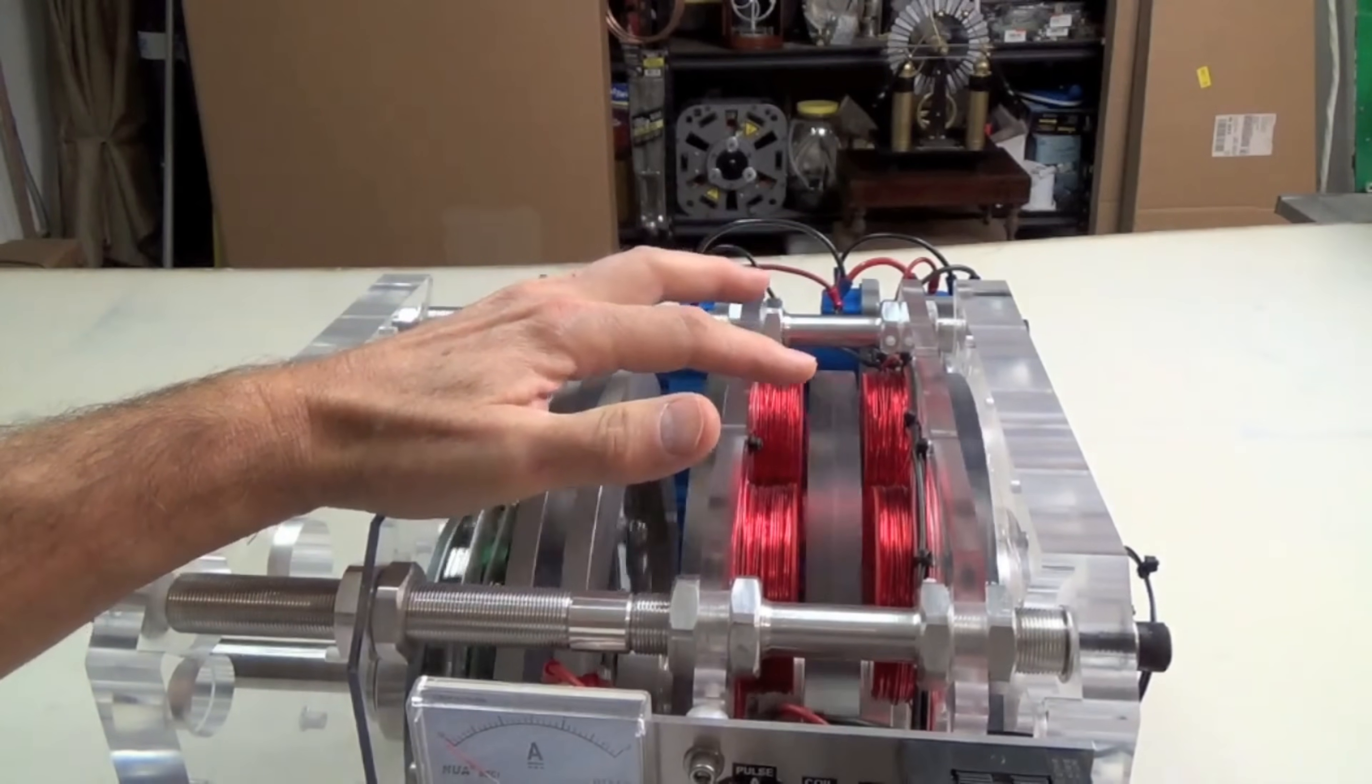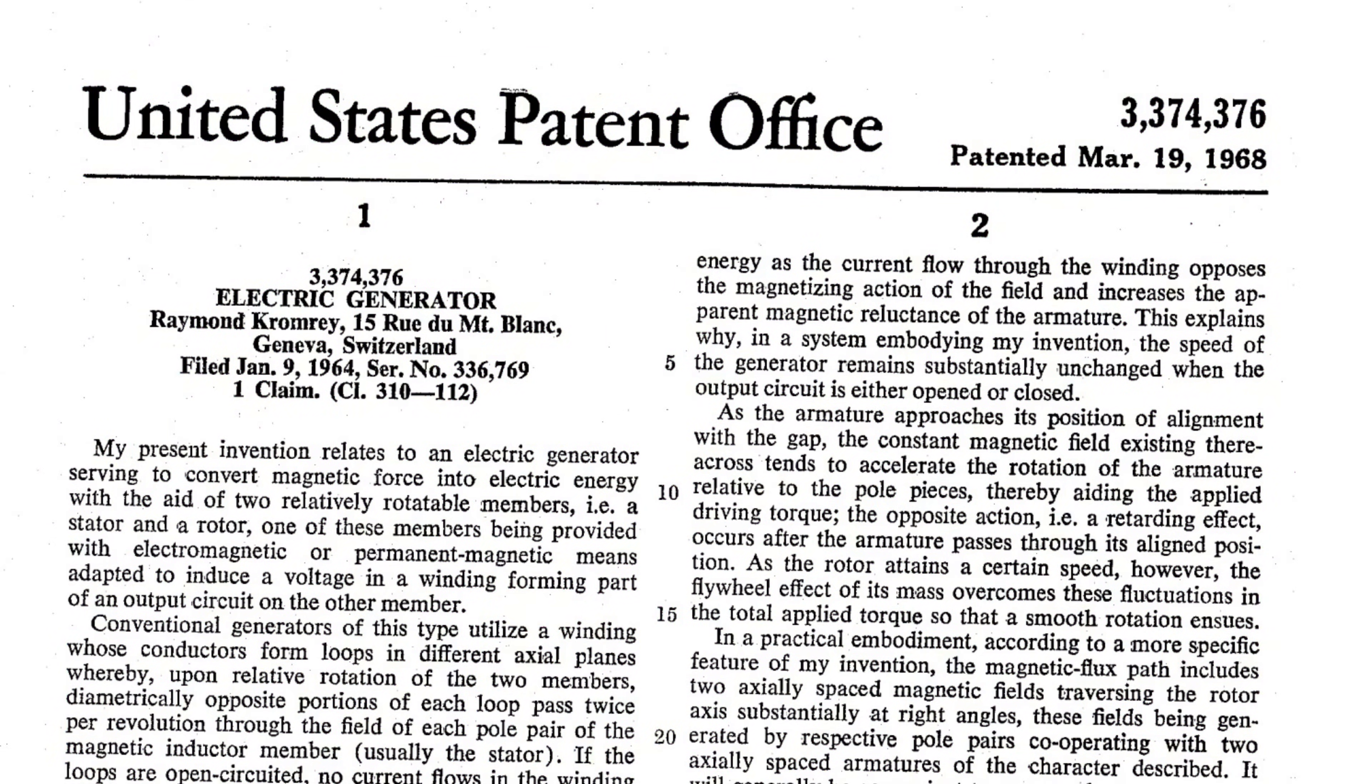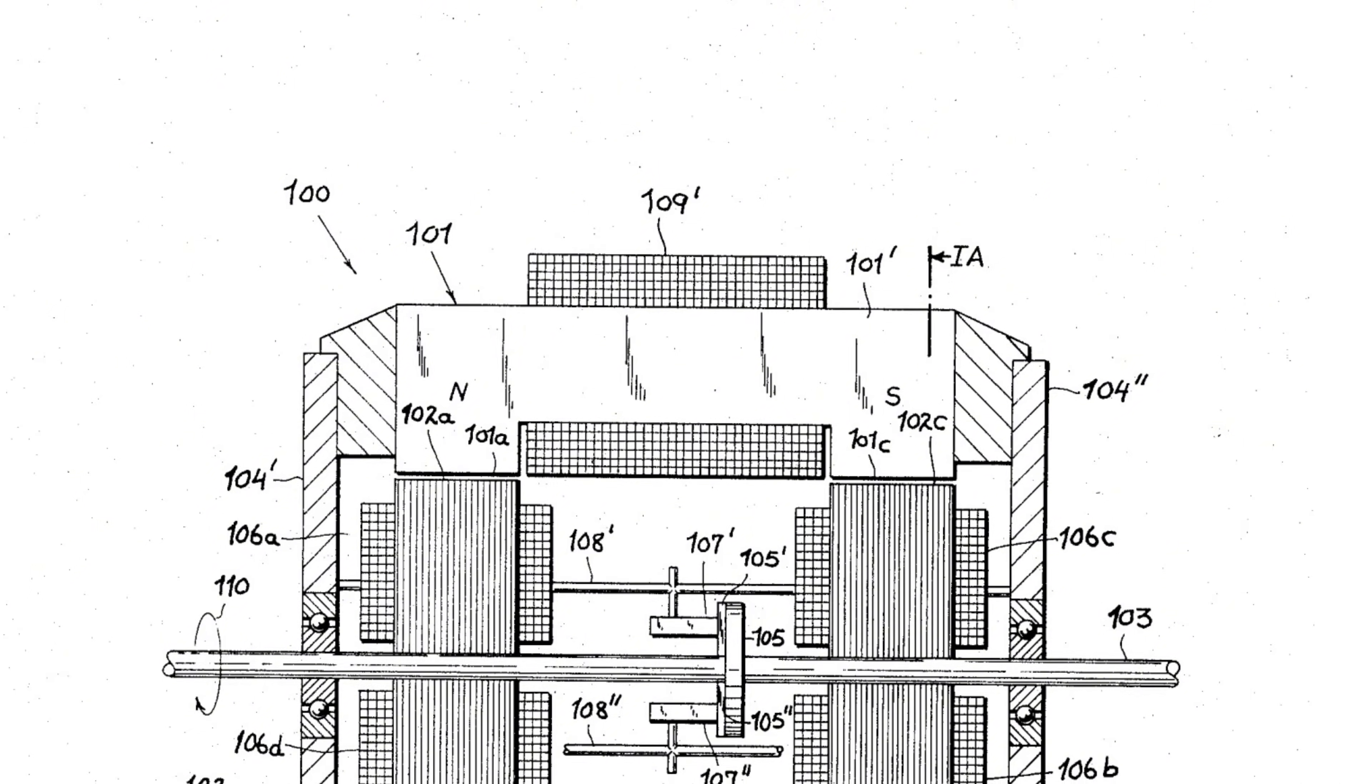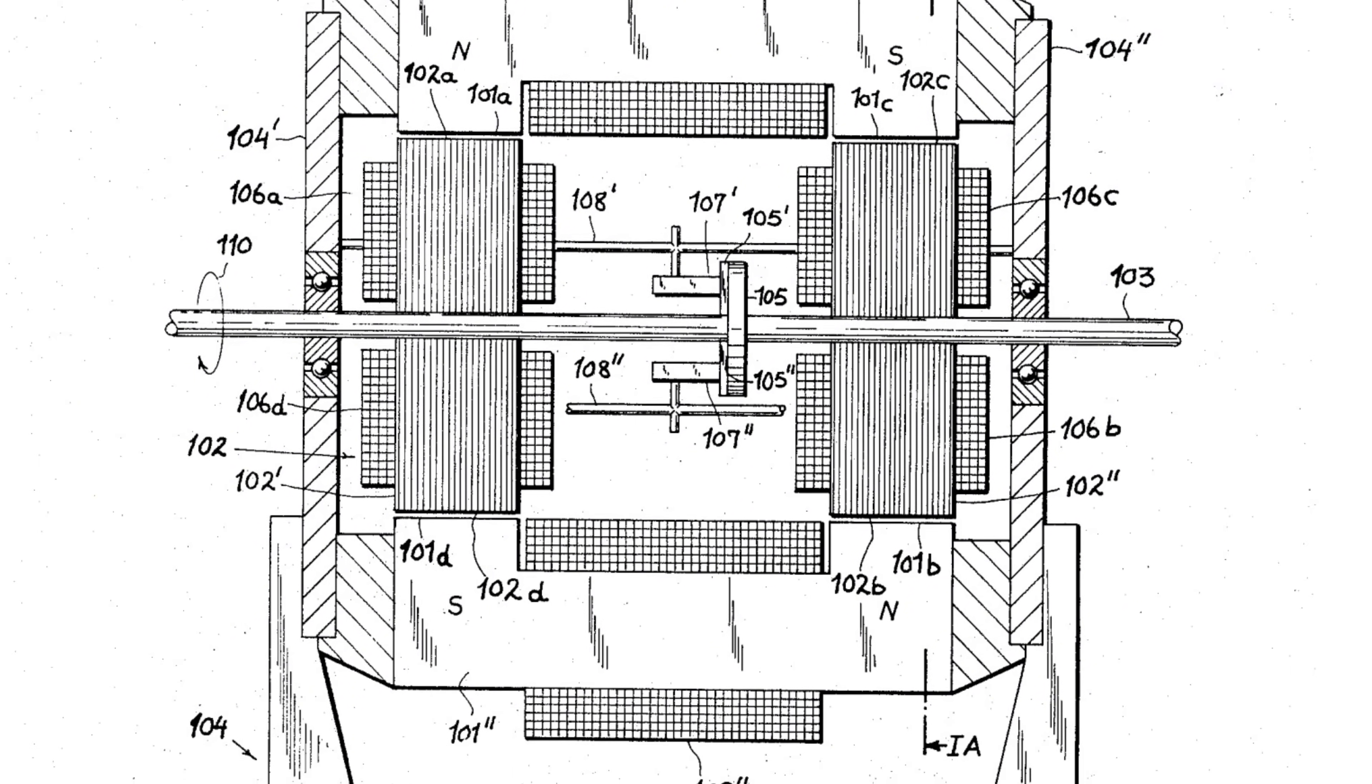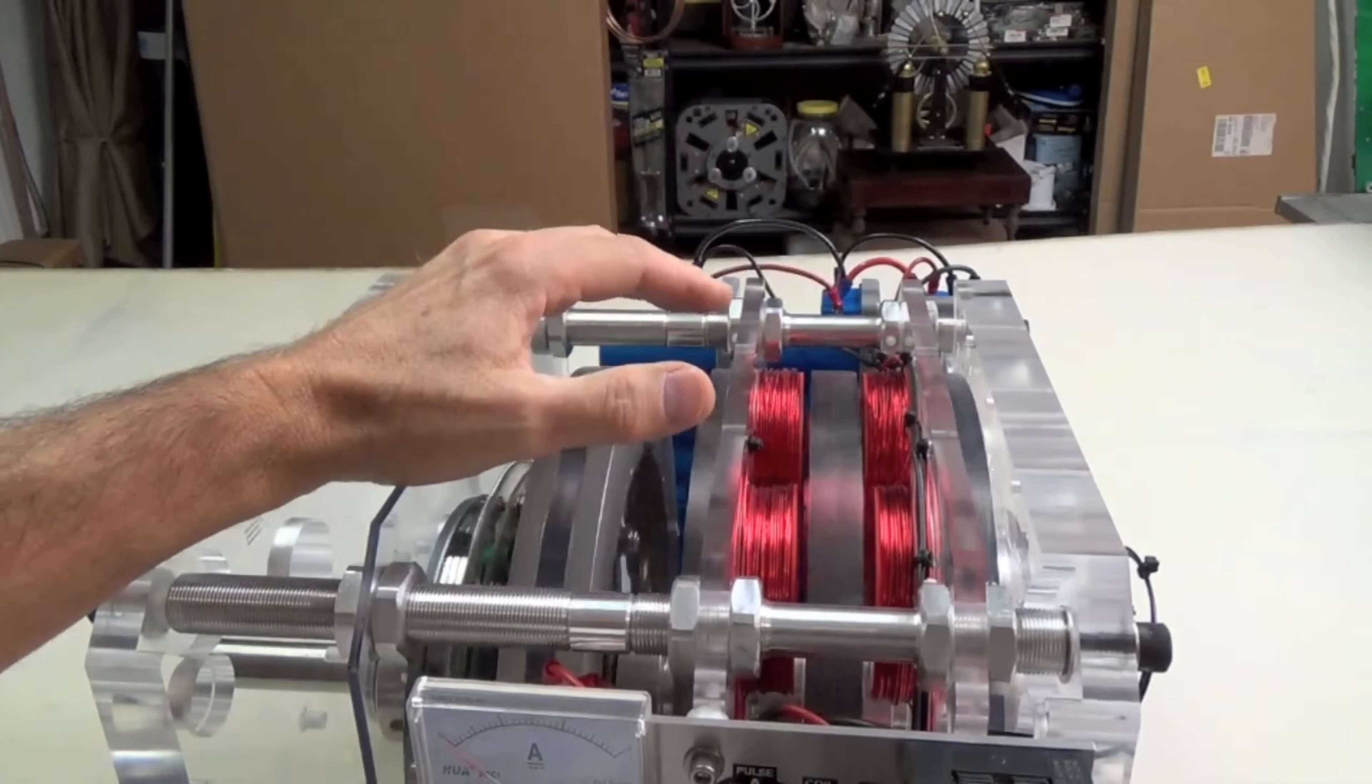After years of tireless research and experimentation, Cromry finally achieved a breakthrough. His prototype magnetic free energy generator began producing a steady stream of electricity, defying the conventional wisdom that energy must be generated through the burning of fossil fuels or the harnessing of nuclear power.